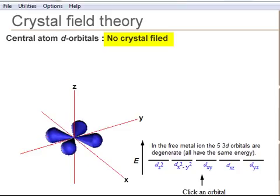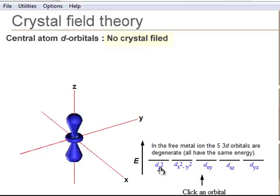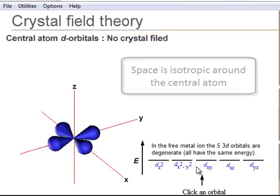For a free transition metal, in the absence of any crystal field, the five d-orbitals are degenerate, which means that they all have the same energy.